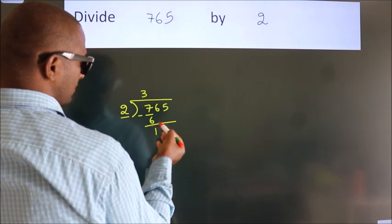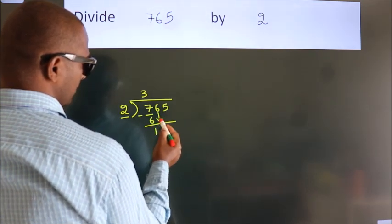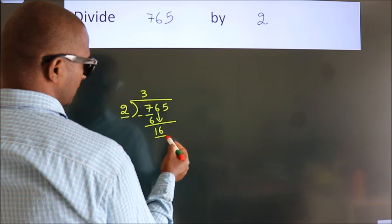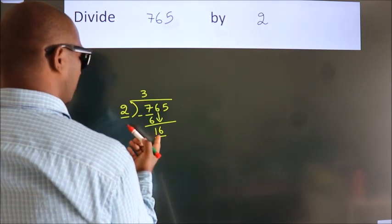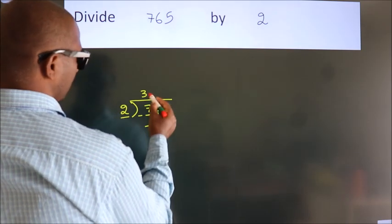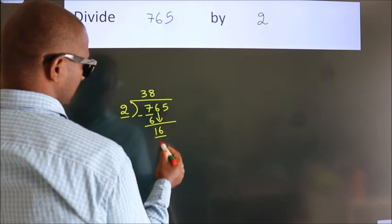After this, bring down the beside number. So, 6 down, giving us 16. When do we get 16 in the 2 table? 2 times 8 equals 16.